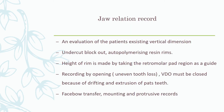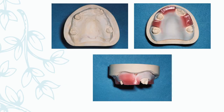For the jaw relation record, an evaluation of the patient's existing VDR (vertical dimension of rest) is done. Undercuts should be blocked out and an occlusal rim is made; the retromolar pad is used as a guide. This follows complete denture principles. Drifting and extrusion of teeth due to uneven tooth loss means we must establish both VDR and VDO. A face-bow transfer on a semi-adjustable articulator may be performed if required.